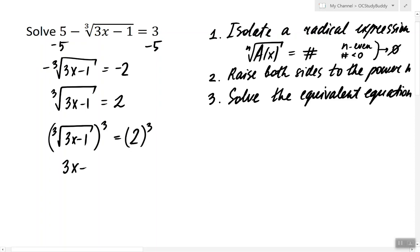So the equivalent equation is 3x minus 1 equals 2 cubed, which is 8. This is a simple linear equation, so to solve it we just isolate the variable x.